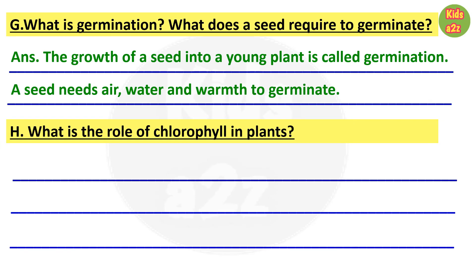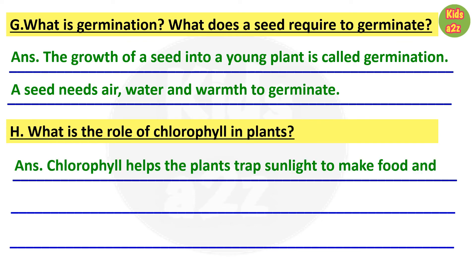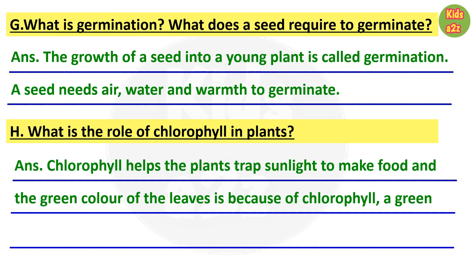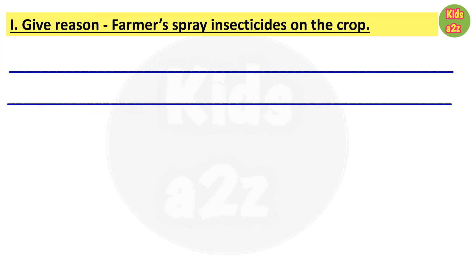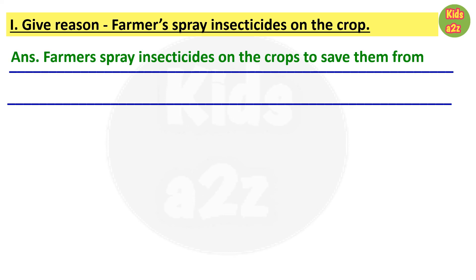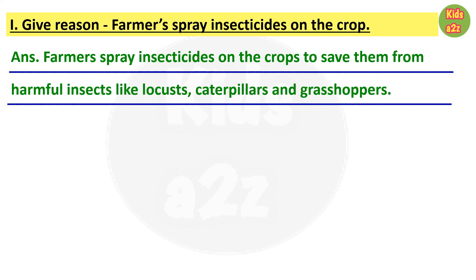Question H: what is the role of chlorophyll in plants? Answer: chlorophyll helps the plants trap sunlight to make food, and the green color of the leaves is also because of chlorophyll, a green substance. Question I: give reason — farmers spray insecticides on the crops. Answer: farmers spray insecticides on the crops to save them from harmful insects and plants like locusts, caterpillars, and grasshoppers. That's all for now, thanks for watching — Kids A to Z.